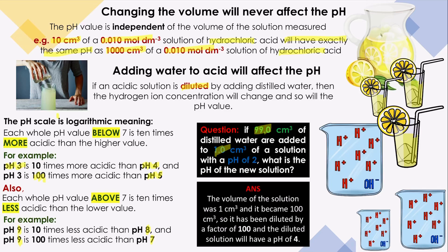The volume went from 1 cubic centimeter to 100 cubic centimeters, so the solution has been diluted by a factor of 100. Since we have two zeros — a factor of 100 — that represents two pH units. Because we are adding water, the solution becomes less acidic, so the pH should increase by 2. The new pH will be 4.